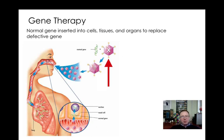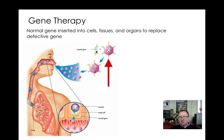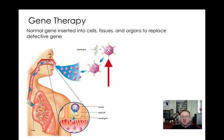Gene therapy involves inserting a normal gene into the cell, tissue, or organ with the intention of replacing the defective gene. To move that gene into cells, we need to use a vector. The normal CFTR gene is added to a virus, which serves as the vector. The virus is taken into the body — for cystic fibrosis, a good delivery method is inhalation — and viral particles deposit the normal gene into the cells lining the lungs. That gene then produces the normal protein and alleviates cystic fibrosis symptoms.